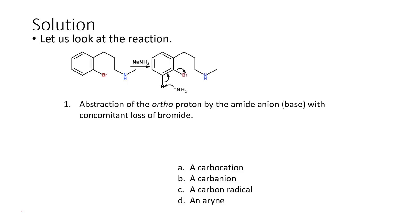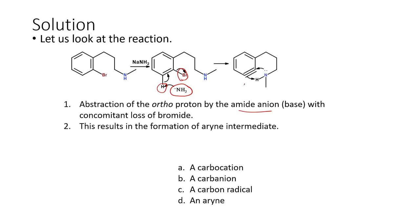In the case of sodium amide NaNH2, this is the base involved in the reaction. The amide anion acts as a base and abstracts the hydrogen at the ortho position with respect to the bromine atom. The abstraction of the proton by the amide anion is the first step. Once the hydrogen is removed, there is a shift of bonds with concomitant removal of the bromide anion. We end up with an arine — a benzyne-type intermediate — formed in this particular case.